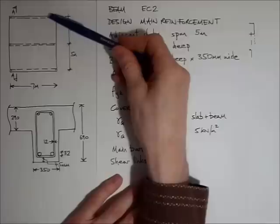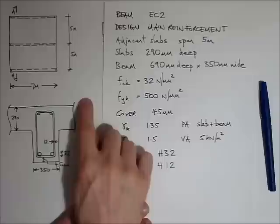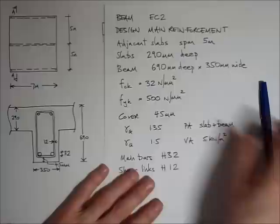We have a pair of slabs, 5m spans, on each side of a central beam. The beam itself spans 7m. The beam is a downstand beam, 690mm deep by 350mm wide.